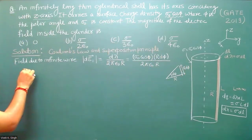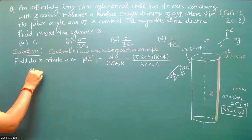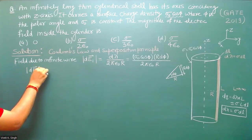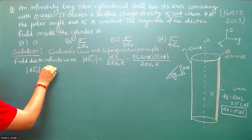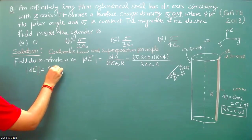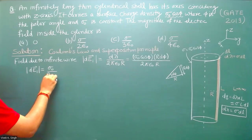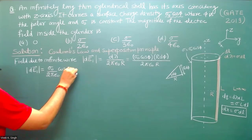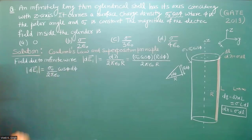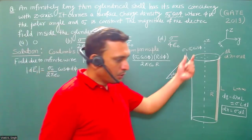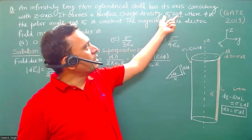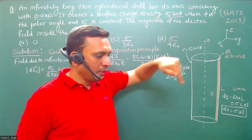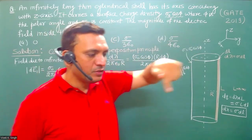So dE₁ is given by σ₀ / (2πε₀) · cos(φ)·dφ, because sigma is σ₀cos(φ) and cos(φ) varies over the range 0 to 2π.